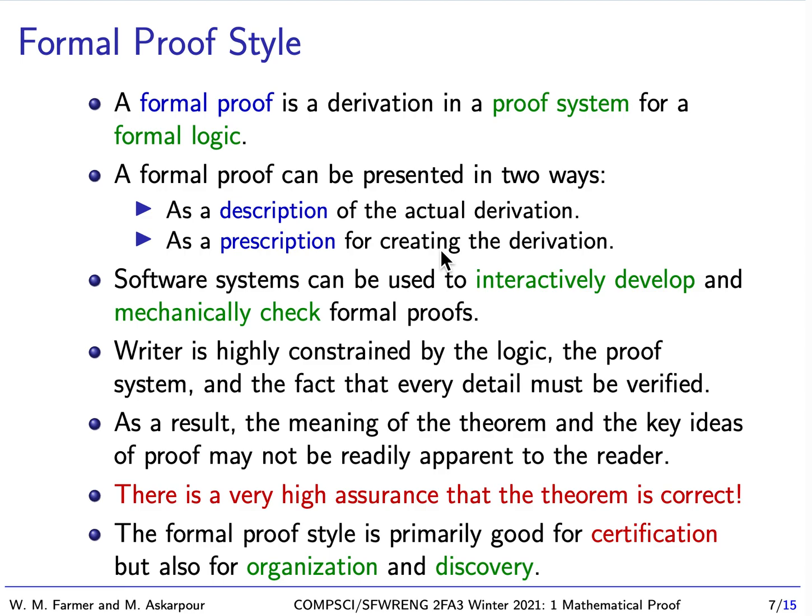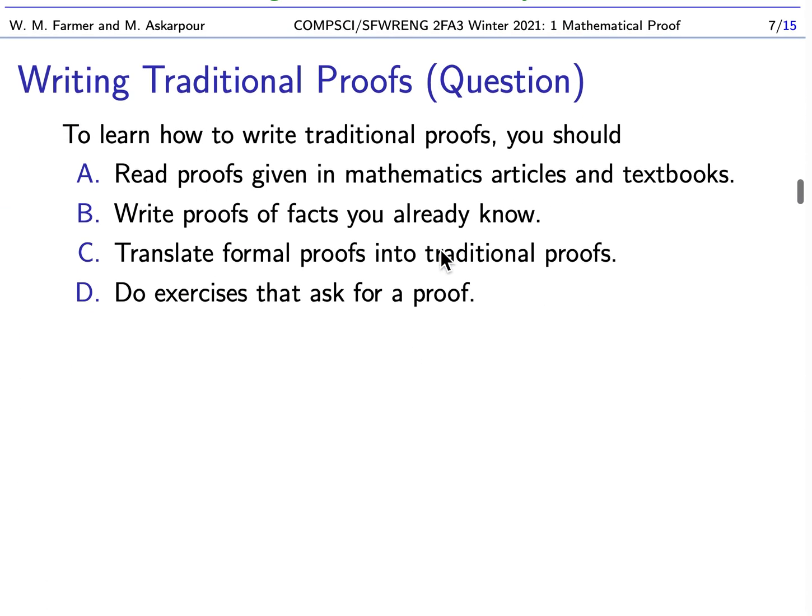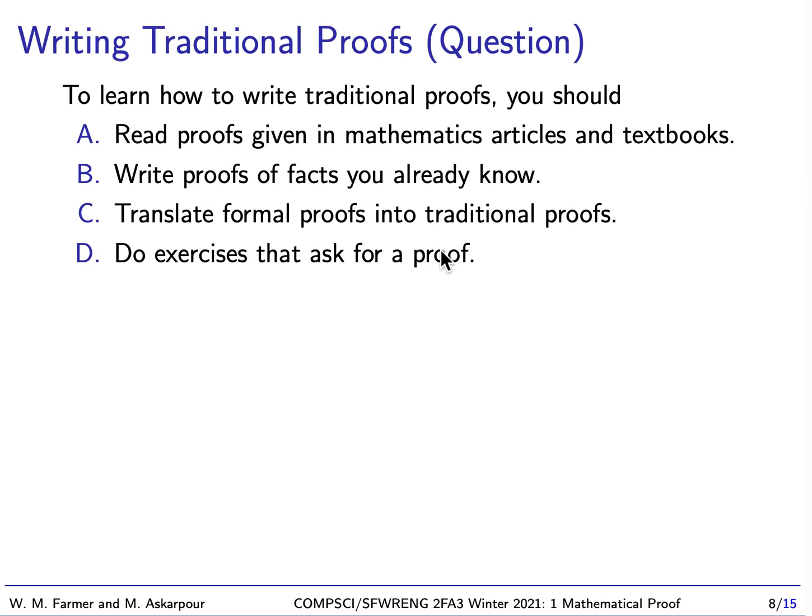Here's another question. To learn how to write traditional proofs, you should: A — read proofs given in mathematics articles and textbooks; B — write proofs of facts you already know; C — translate formal proofs into traditional proofs; or D — do exercises that ask for proof. Stop the video, think about your answer, then start up again.